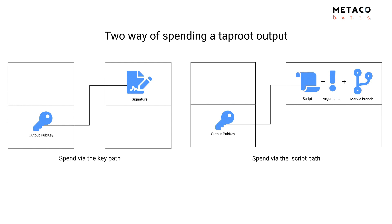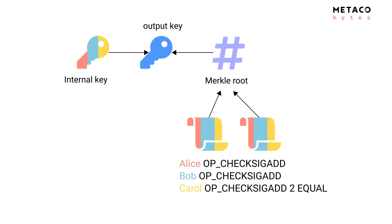The Merkle branch represents a chain of hashes to prove that this script is committed to by the output public key, along with arguments to pass the script — typically other signatures. The output key is a computation of the Merkle root of the scripts, called tapscripts, and also an internal key. This internal key can be an aggregated key of different users — for example Alice, Bob, and Carol — and together they can create signatures using the MuSig protocol, which I will present today.